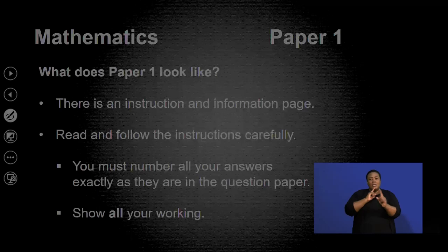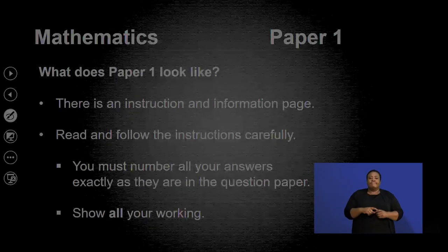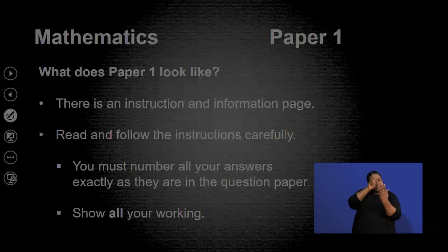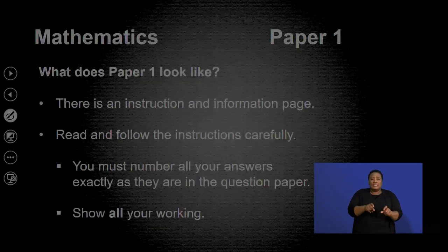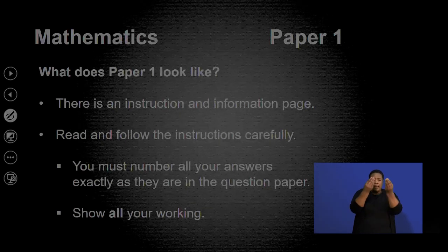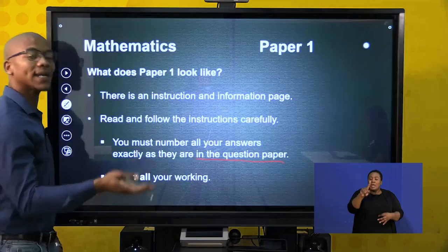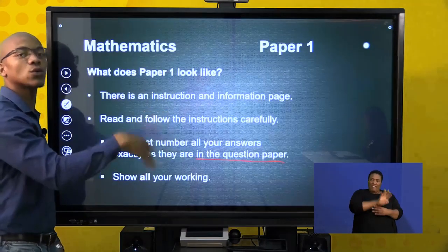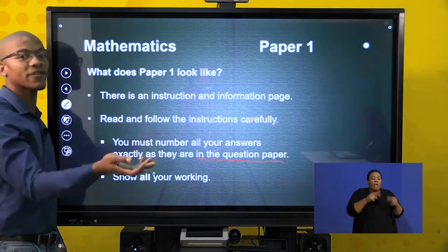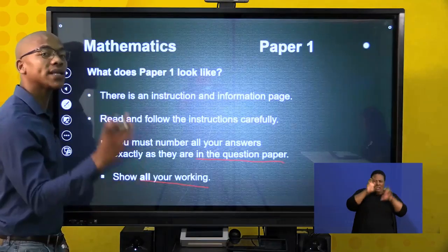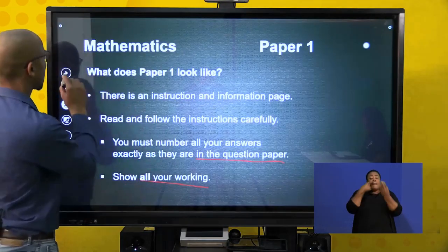There is an instruction and information page available for you. You need to read the instructions and follow them carefully. You must number all your answers exactly as they are in the question paper. So if you start with question 5, you can leave 5.5 and go to question 6, then do 5.5 after. Also, you need to show your working because your marks lie on what you show in terms of your steps.